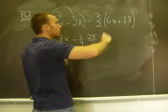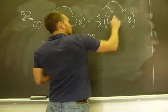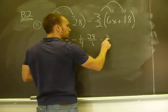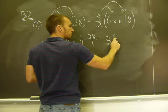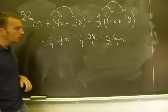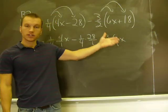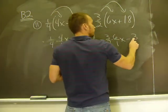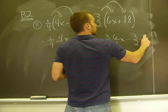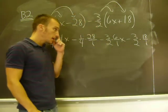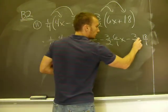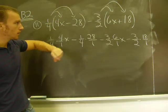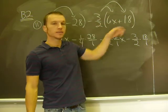Now, same thing with the three halves and the other set of parentheses. This is a negative three halves times a positive six X. And that's my X term over there. I'm going to make that a fraction just like the other one, six over one. And now for the eighteen.